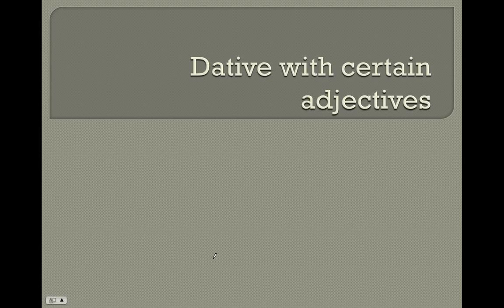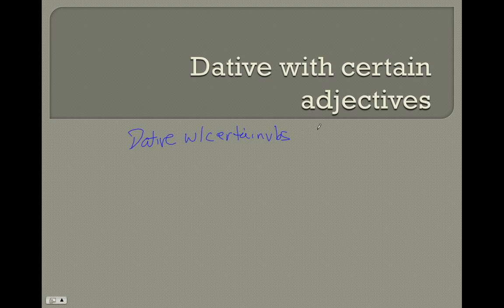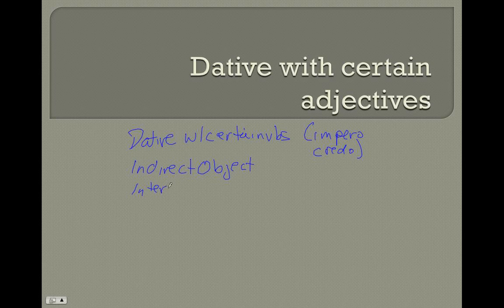This lesson will introduce you to a new use of the dative: the dative of certain adjectives. We've already covered things like the dative with certain intransitive verbs, like impero or credo, meaning to obey or to trust, the indirect object — I gave the gift to the woman — and the dative of interest, as in 'this isn't good for me.'